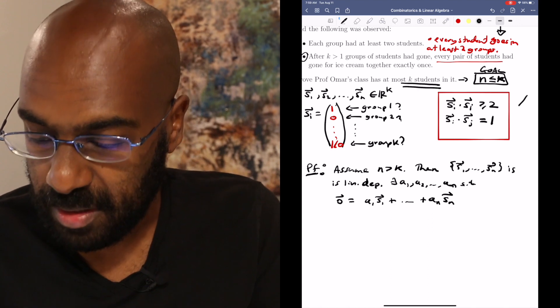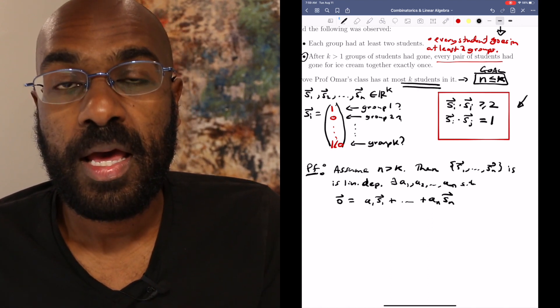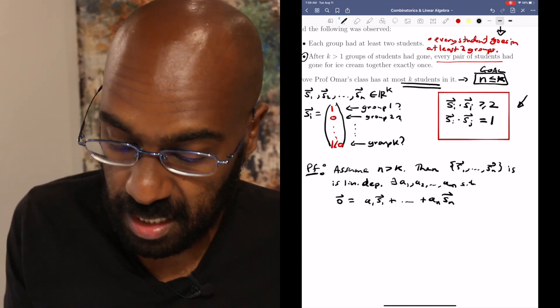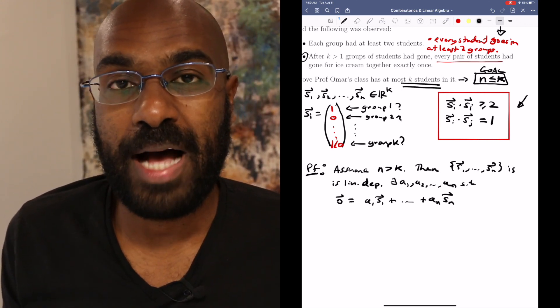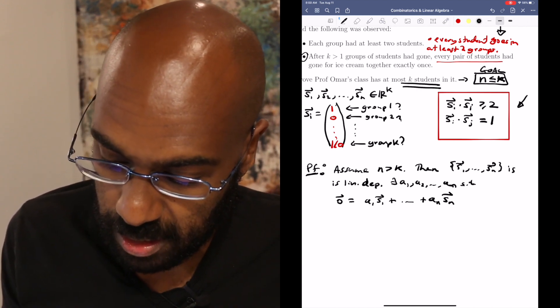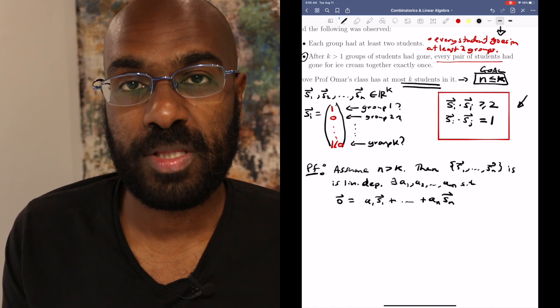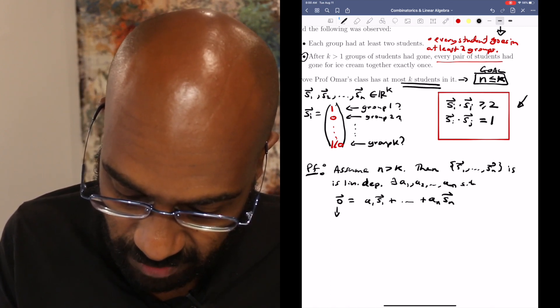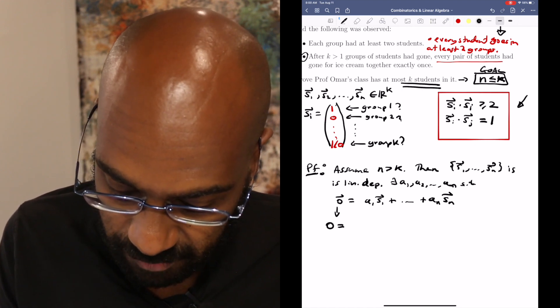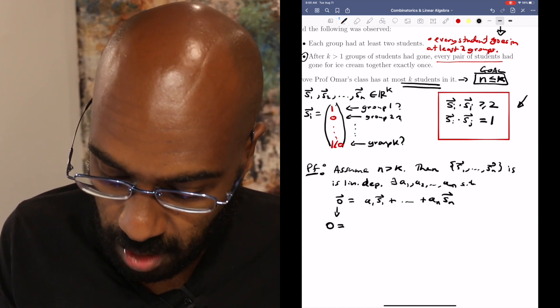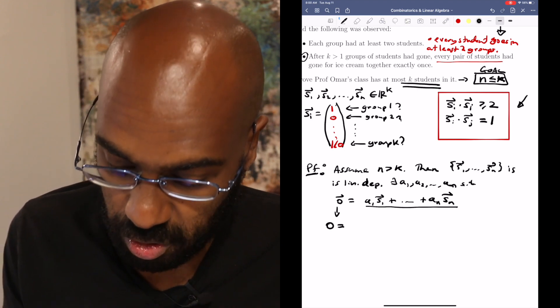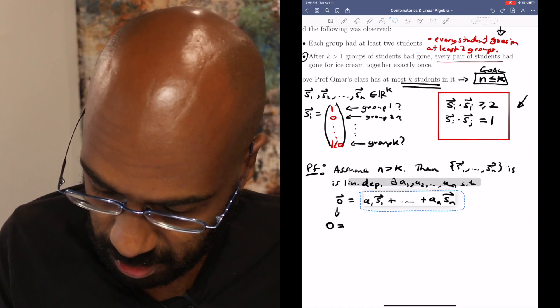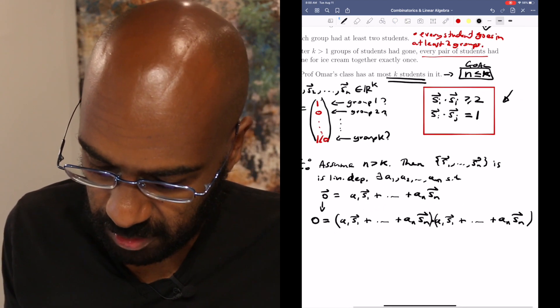Alright, now the information that we have about these vectors is the information in this box here, and that information is about dot products of the vectors with themselves. So it would make sense to have some type of algebraic object where it involves dot products of the si's with themselves and si's with sj's. We can do that by taking the dot product of this vector with itself. Now the dot product of the 0 vector with itself is 0, and then the dot product of this vector with itself is going to equal 0 because this is the 0 vector. Okay, so what we'll do is maybe copy this thing here and so 0 is the dot product of these two things.